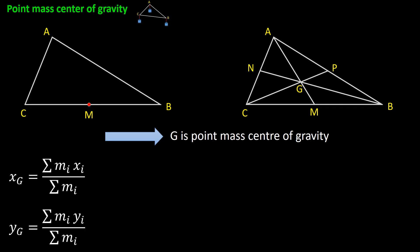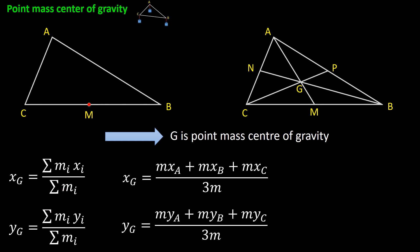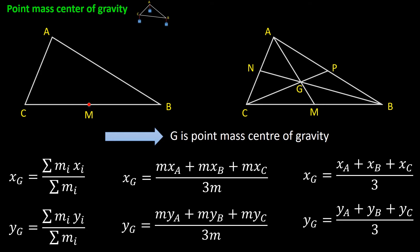If you have the coordinates of vertices A, B, and C, we can calculate the coordinate of the center of gravity using this formula. The x component is the summation of masses at each vertex multiplied by the x component of that vertex, divided by the total mass — and the same for the y component. Because we assume that equal masses are connected to each vertex, we get mxa + mxb + mxc divided by 3m. Simplifying, the x coordinate is (xa + xb + xc) / 3, and the y coordinate is (ya + yb + yc) / 3.